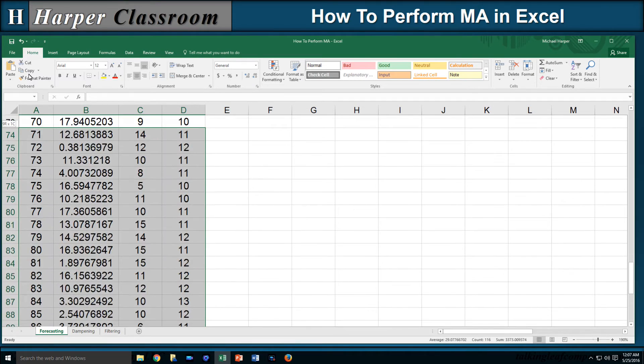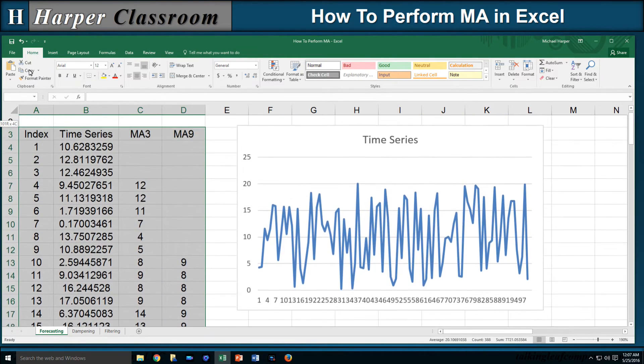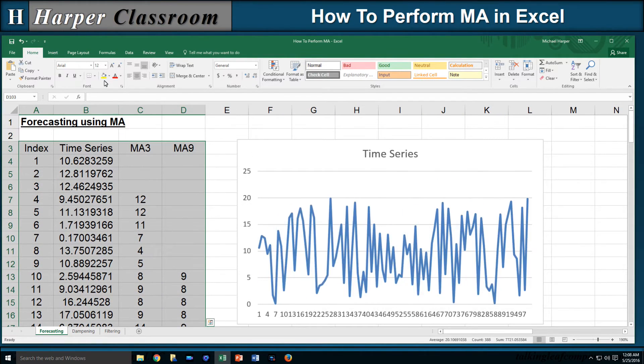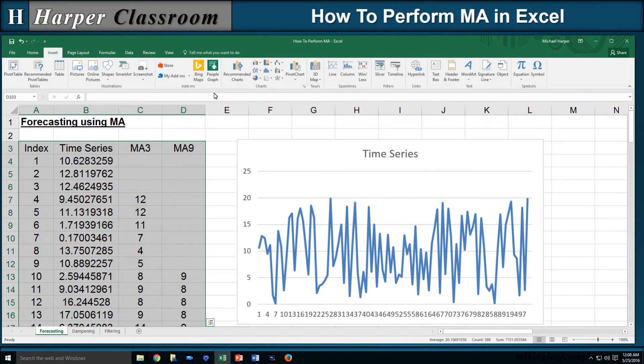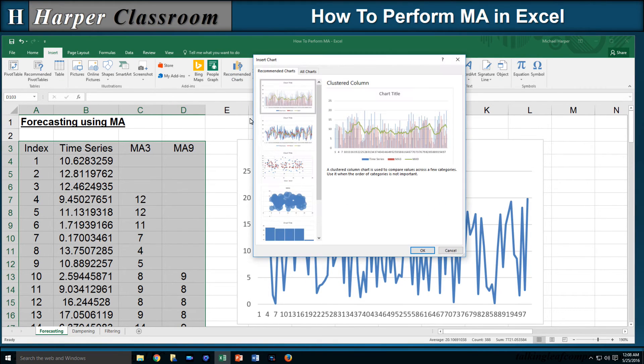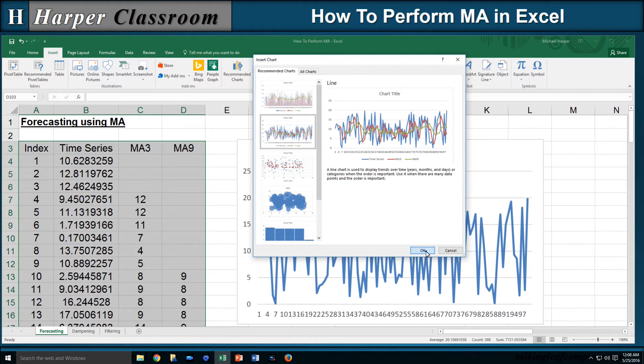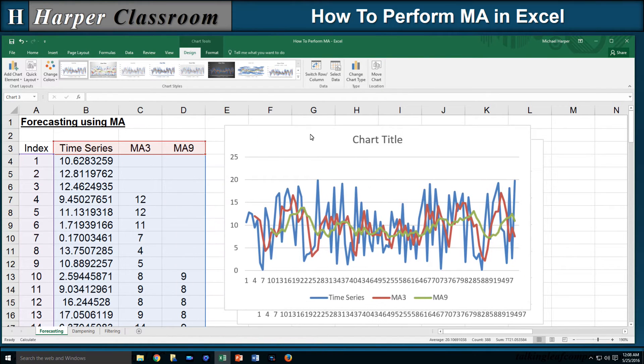Now if I highlight my index, time series, and both my moving averages, go to Insert, Recommended Charts, plot all of them together, I can see that I have my time series in blue, my MA3 in red, my MA9 in green, and we can see that since my window of MA9 is larger than MA3, it's much more stable. Well here's where dampening comes in.